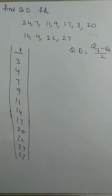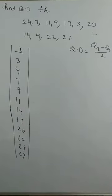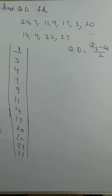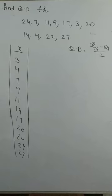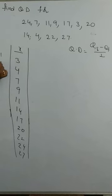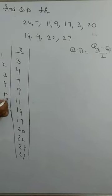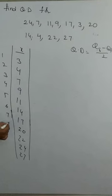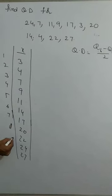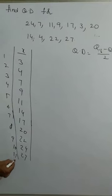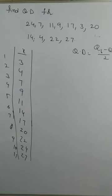To find the quartile, the data should be arranged in ascending order. Counting the observations: 1, 2, 3, 4, 5, 6, 7, 8, 9, 10, 11 — there are a total of 11 observations.